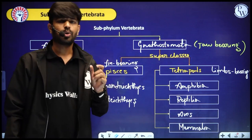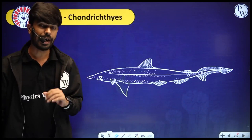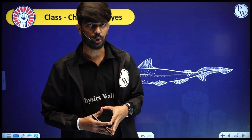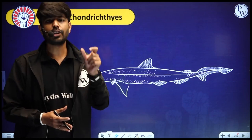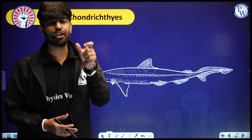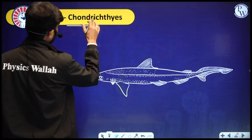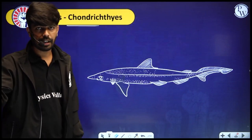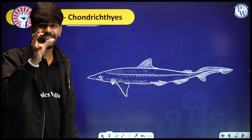Let's start with class Chondrichthyes. The study of fishes is called ichthyology, and the rearing and domestication of fishes is called pisciculture. Now, decoding the name: 'Chondro' refers to cartilaginous tissue — chondrology is the study of cartilaginous tissue and chondrocytes are the functional units of cartilaginous tissue. So Chondrichthyes are commonly called cartilaginous fishes.